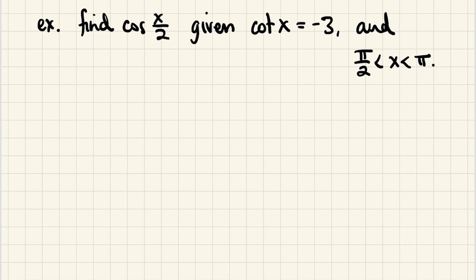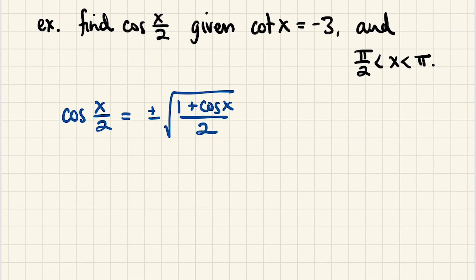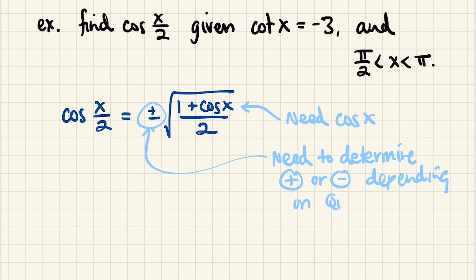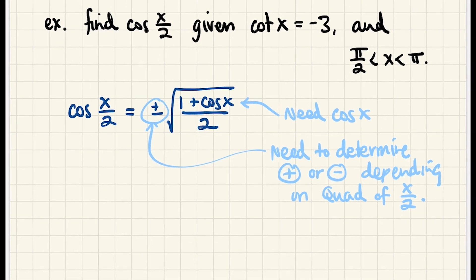For this next example, we are interested in cosine of x over 2, so it's a good idea to start with the half angle identity for cosine. This is going to be plus or minus the square root of 1 plus cosine of x, all over 2. We need to do two things: determine what cosine of x is — which we can figure out with a triangle since we have cotangent of x — and determine whether the result is positive or negative, which depends on the quadrant of x over 2.